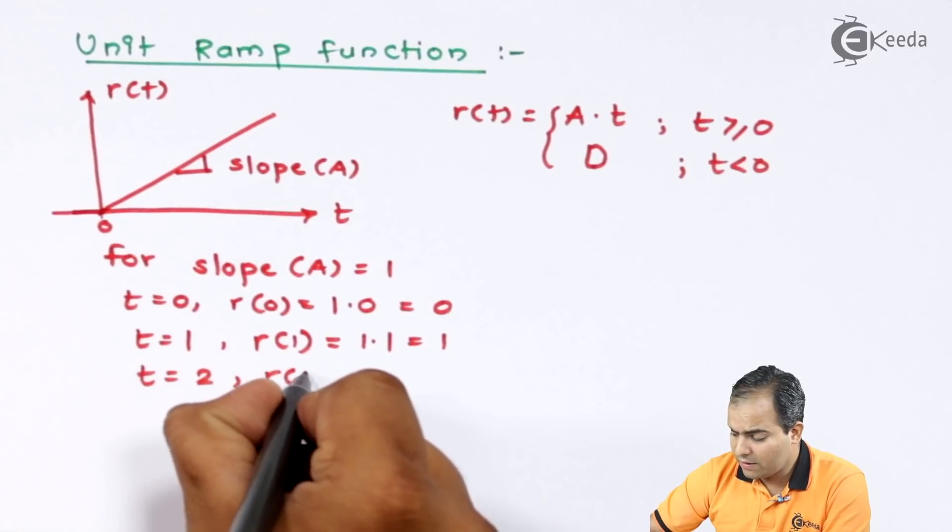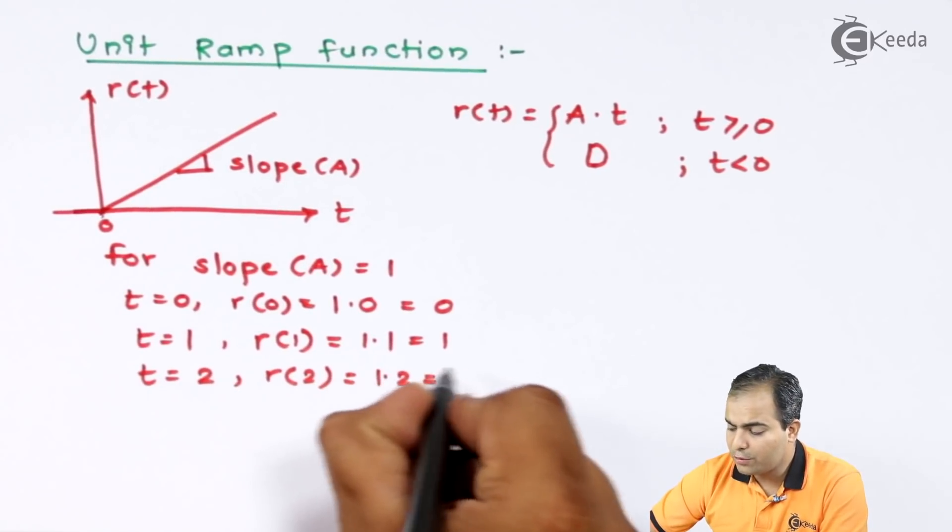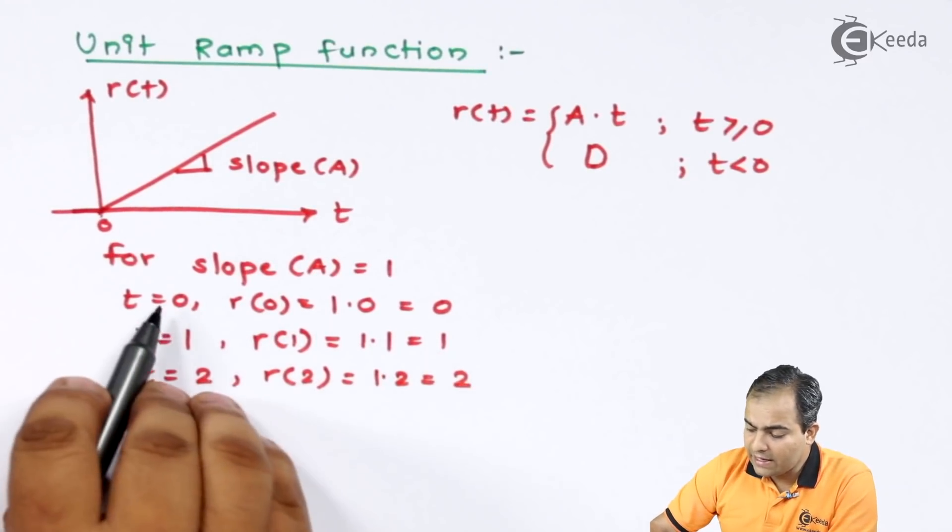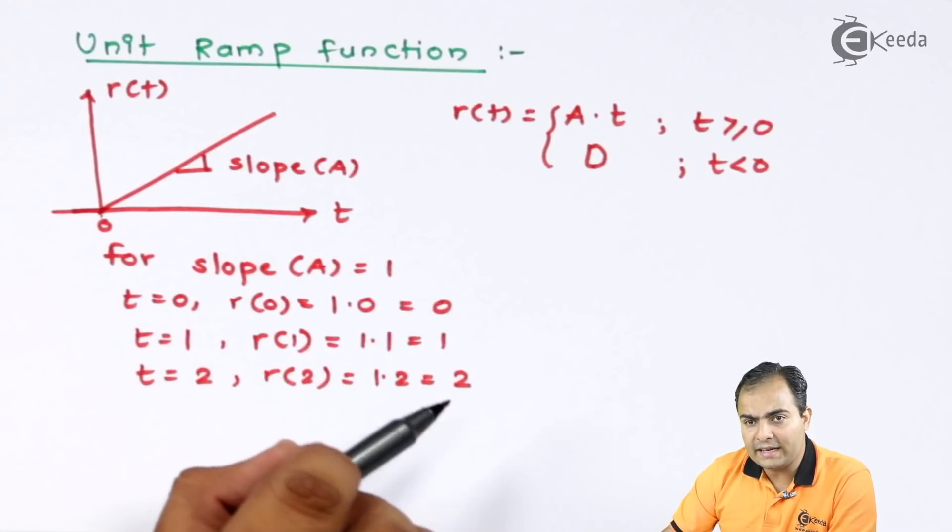And now, for t is equals to 2, I'll write R of 2, and now it is 2 into 1 is 2. So you can see, as the time increases, accordingly, your amplitude also increases.